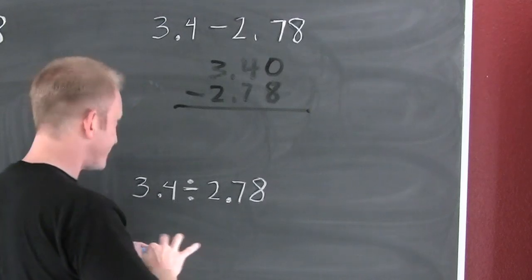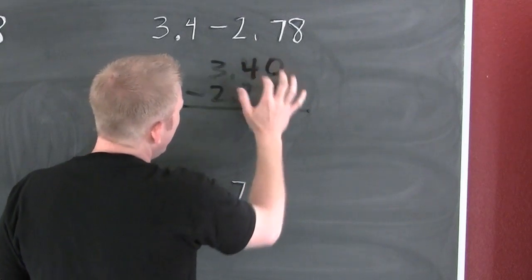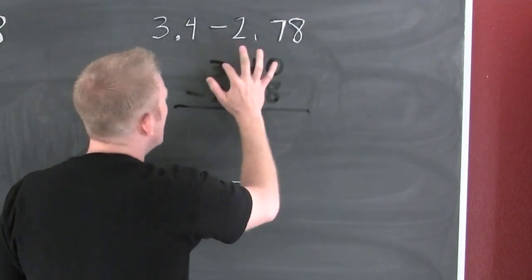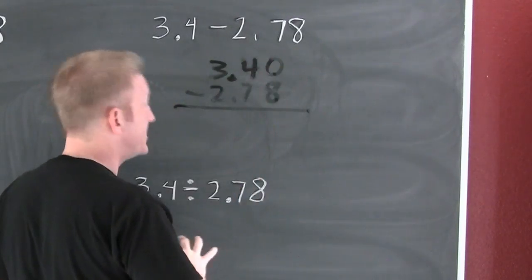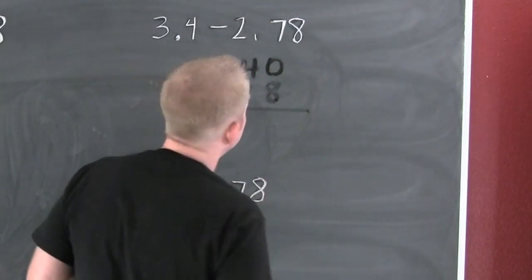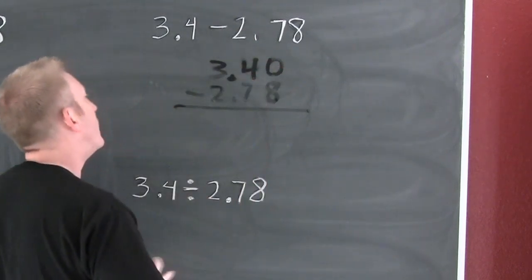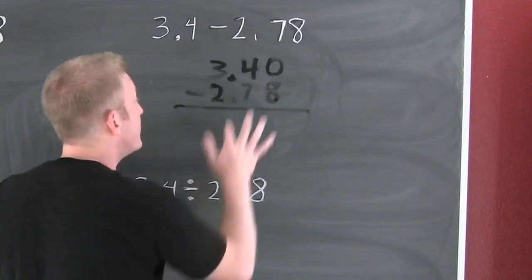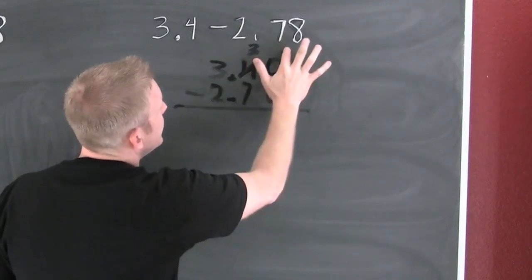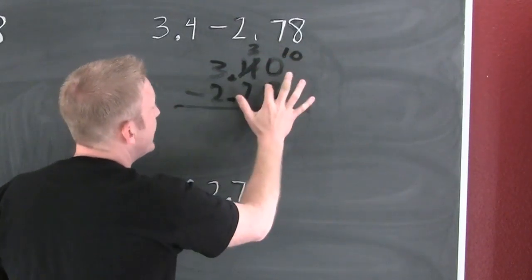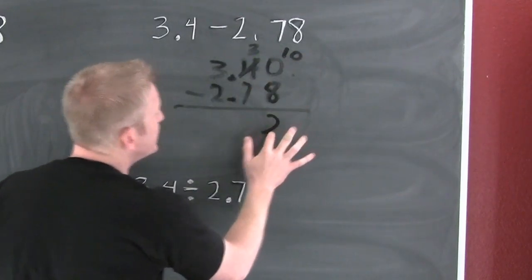I put the big one on top. Can I take 8 from 0? No. So 0 has got to borrow. 0 is like, 'Hey 4, can I have a hundredth?' And 4 is like, 'No, 0 — you're nothing.' 0 gets all sad but still wants to borrow, so he asks 4 again. And 4 says, 'No man, in this economy it's a recession.' Finally 4 gives it up, and 4 becomes a 3. So this becomes 10. Now 8 can take from 10 — can I take 8 from 10? Yes, I get 2.